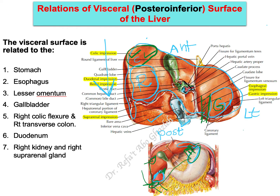Posteriorly and toward the midline, the cap on the upper pole of the right kidney is the right suprarenal gland, which also creates an impression on the visceral surface of the liver called the suprarenal impression. Remember it is close to the inferior vena cava, so if there is a tumor or mass in the suprarenal gland, you may expect compression on the inferior vena cava.